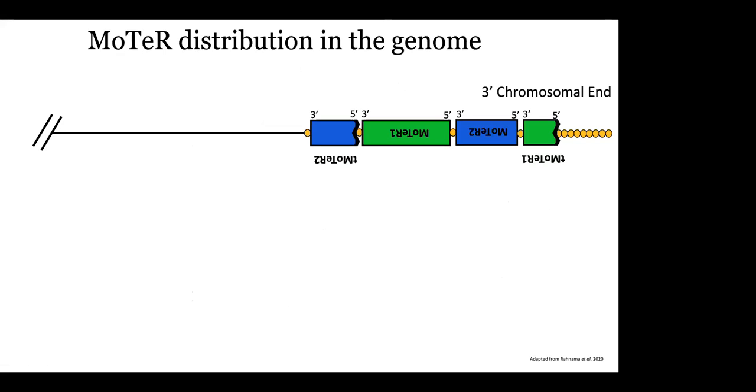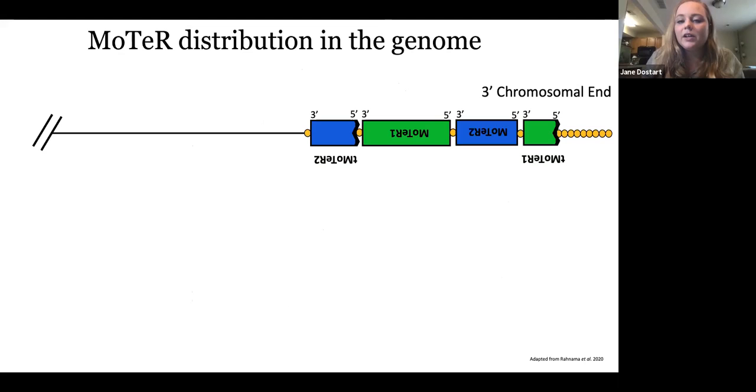Here we have MoTeR 1, which codes a reverse transcriptase and is about 5 kilobases long. And we also have MoTeR 2, which is about 1.7 kilobases long, and does not encode a reverse transcriptase, but shares synteny in the 3' and 5' regions with MoTeR 1. Within the telomere, or within the genome, MoTeRs typically exist like so, where you can have them in an array. They exist in the opposite direction. So this is the 3' end of the chromosome, and the MoTeRs are sort of flipped where their 5' end is facing the opposite direction. Here we have truncated and full MoTeRs. I will note that in other telomeres, we might have one MoTeR, or we'll have telomeres that don't have any MoTeRs inserted.